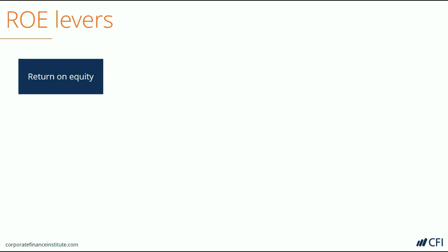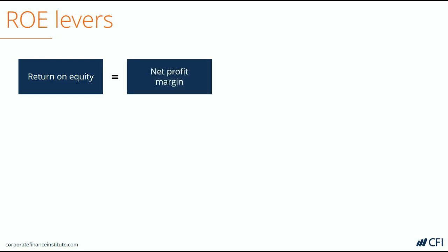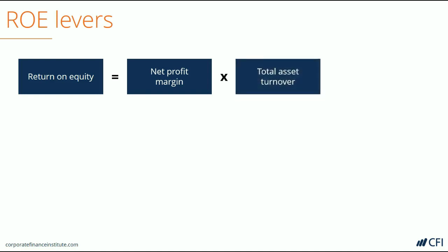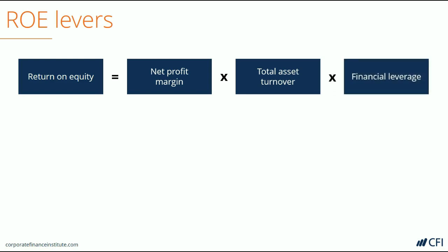If ROE holds the key to the story, what does it unlock? If we open up ROE, we see that it is made up of three primary ratios. ROE can be set equal to the net profit margin of the business multiplied by its total asset turnover ratio, multiplied by its degree of financial leverage.